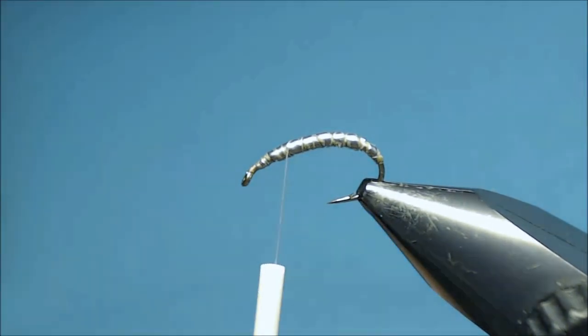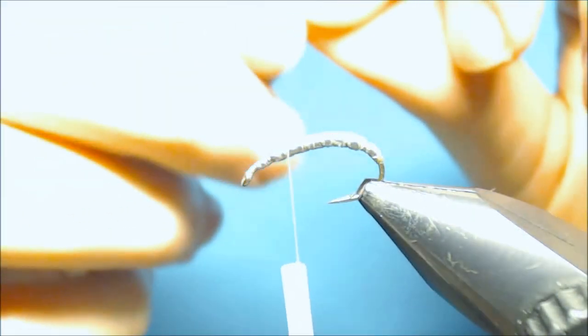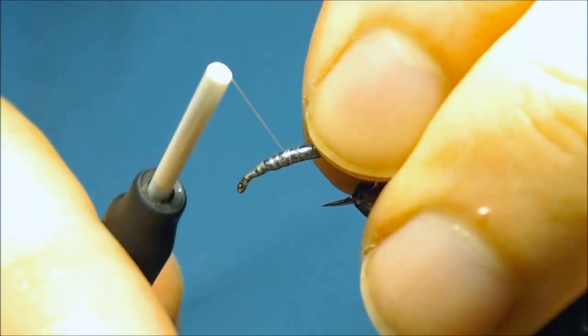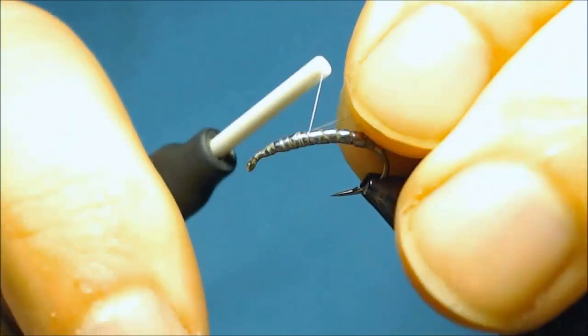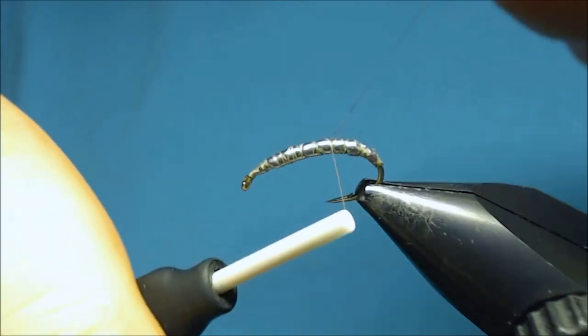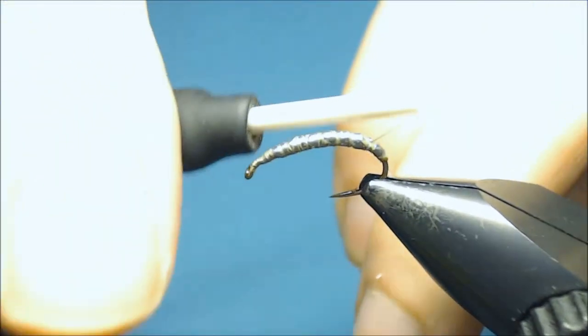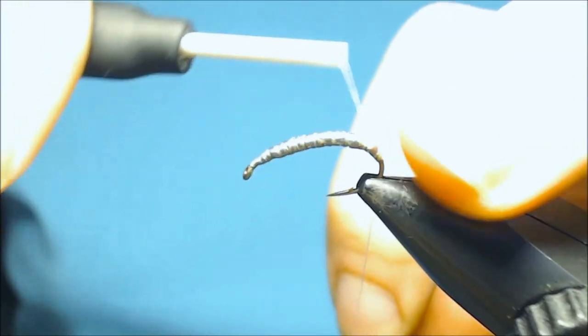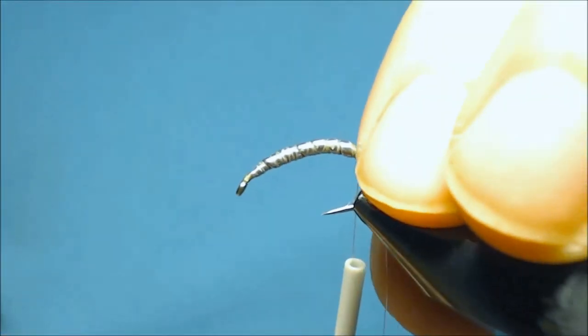And I like this to be thin for two reasons. The first one is to not build up the body because we want to keep this as slim as possible. And then also it will sink down in the shell back of the fly making for some nice segments.